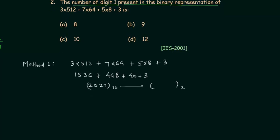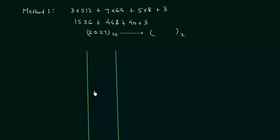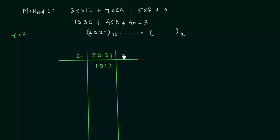We already know how to convert a decimal number to binary. The number is 2027 and we will divide by 2, because in the binary number system the base is 2. Dividing 2027 by 2 gives quotient 1013 with remainder 1. Dividing 1013 by 2 gives 506 with remainder 1.